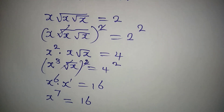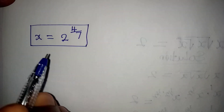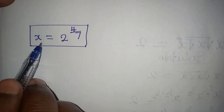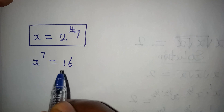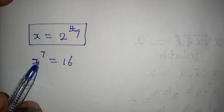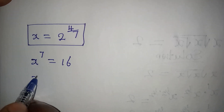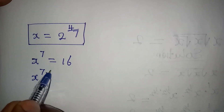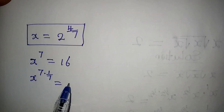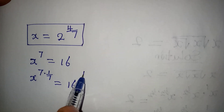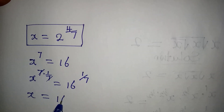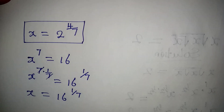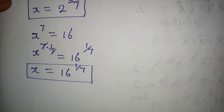Let me bring the two solutions from the two methods together. From method 2, we have x to the power of 7 equal to 16. To find x, we multiply the power by its reciprocal 1/7, and that must also be applied to the right side. So x equals 16 to the power of 1/7.